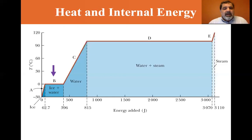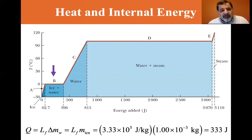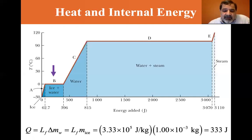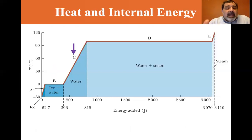Now we convert ice to water — this is where we use latent heat. Q = L_f · Δm_water = L_f × mass of ice = (3.3 × 10⁵ J/kg)(1 × 10⁻³ kg) = 333 joules. It takes 333 joules of energy to melt this one gram of ice.